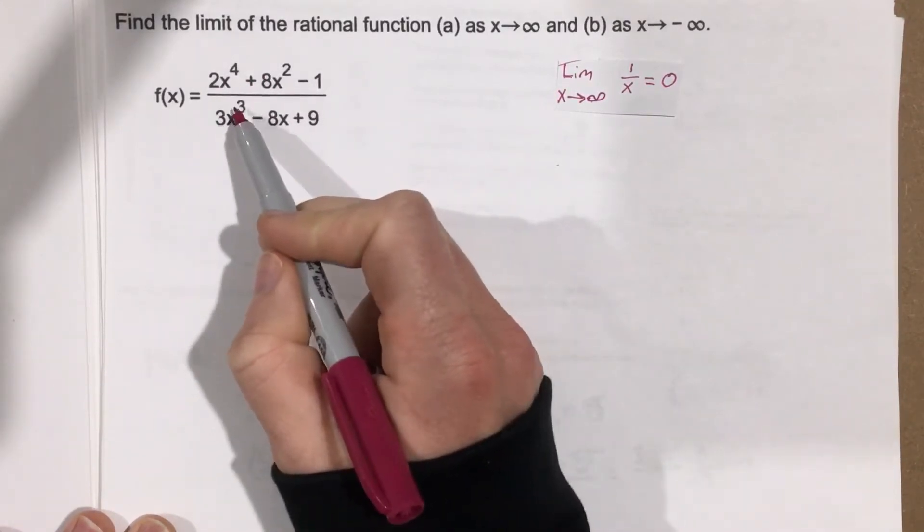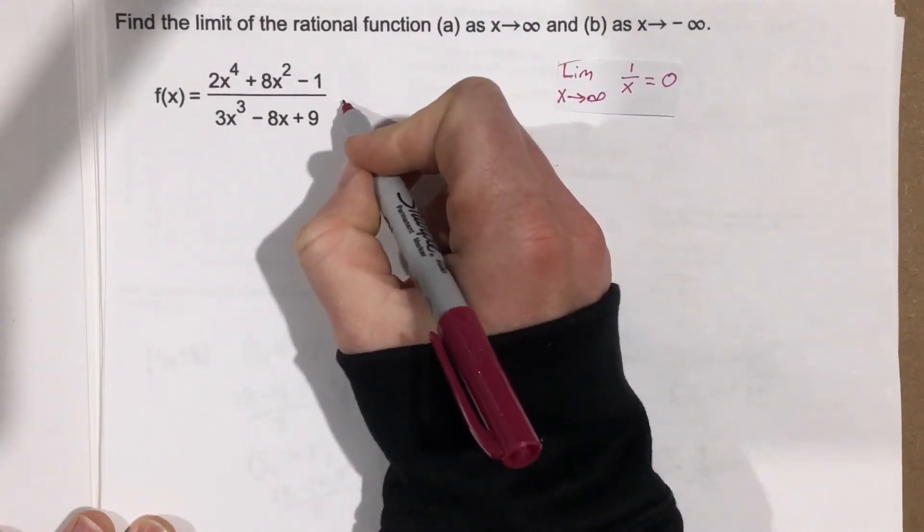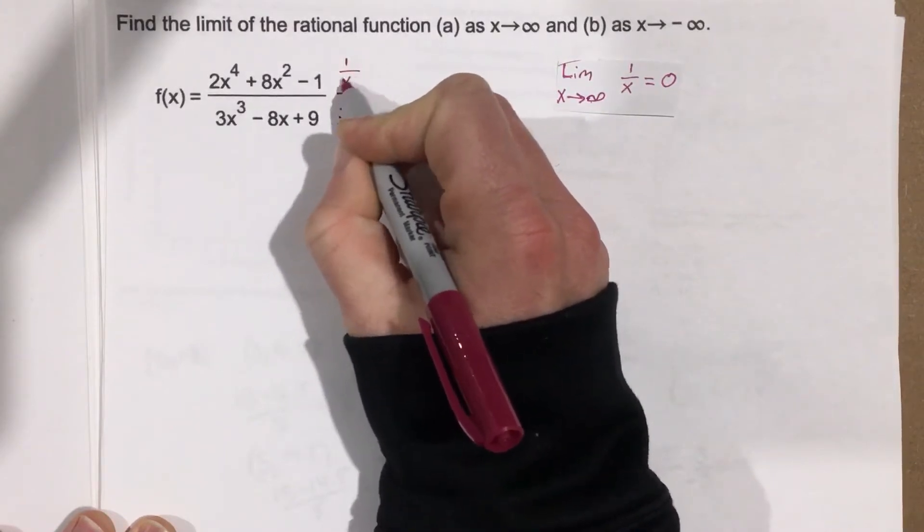In order to do that I'm going to look at the denominator's highest power, which is x cubed. So I'm going to say 1 over x cubed, and I'm going to multiply that on both top and bottom.